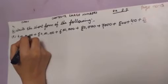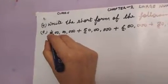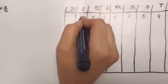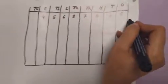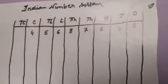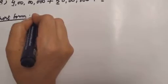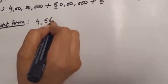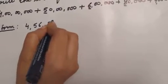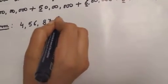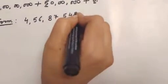Now — ones, tens, hundred, thousand, ten thousand, lakh, ten lakh, crore — four crore. We will write four in crore's column. Now combine all these numbers to write in short form. The short form is four crore, fifty-six lakh, eighty-seven thousand, five hundred forty-eight.